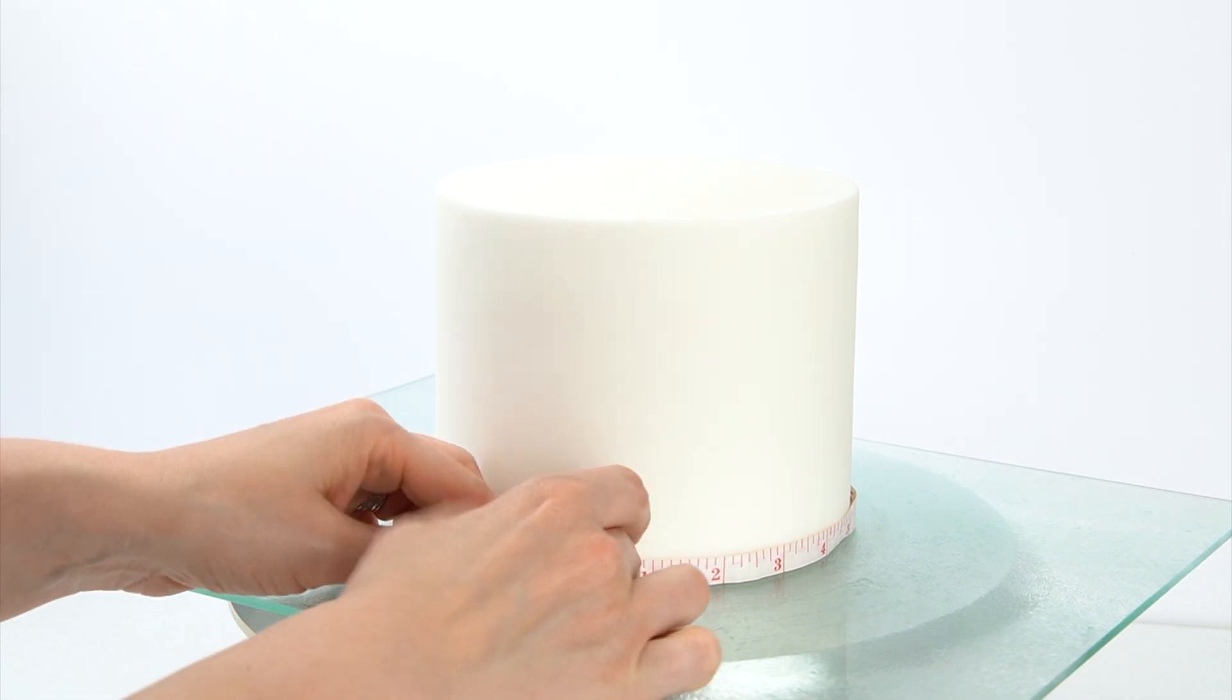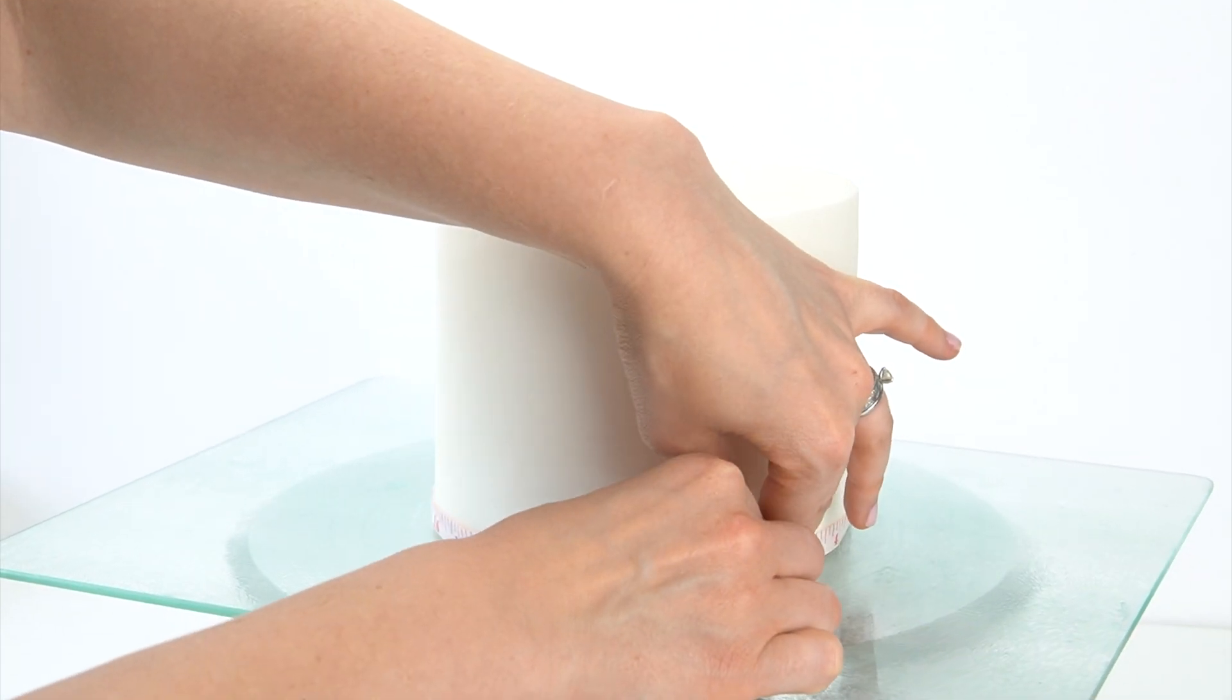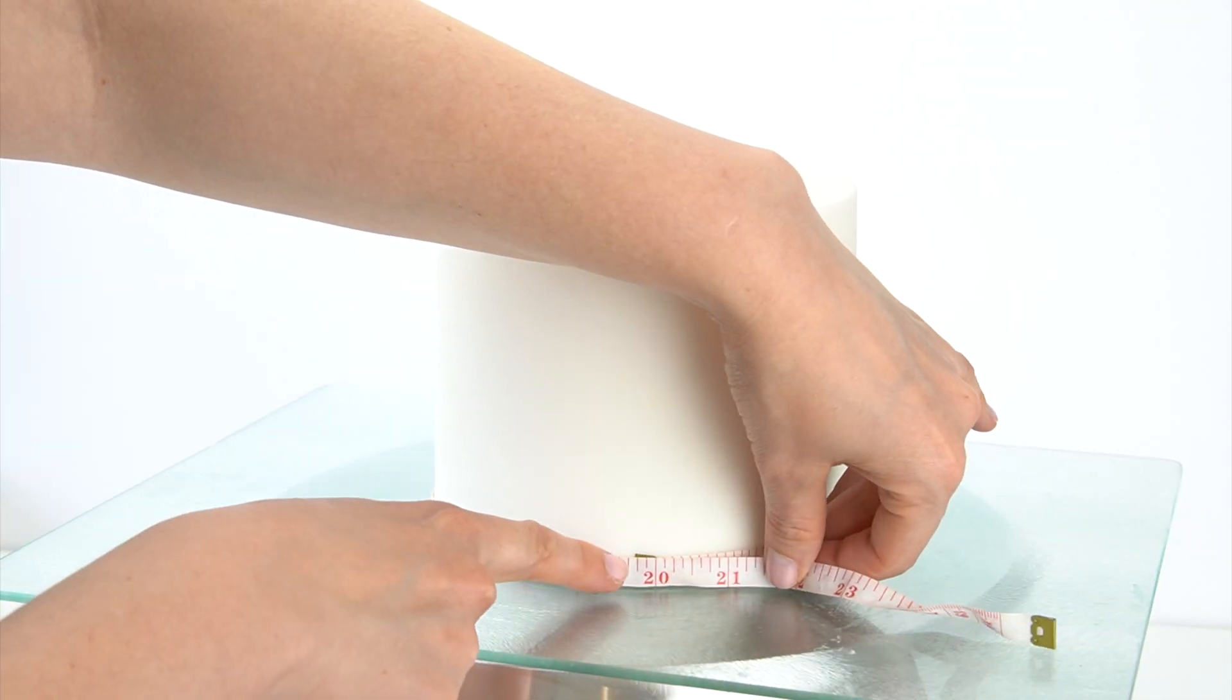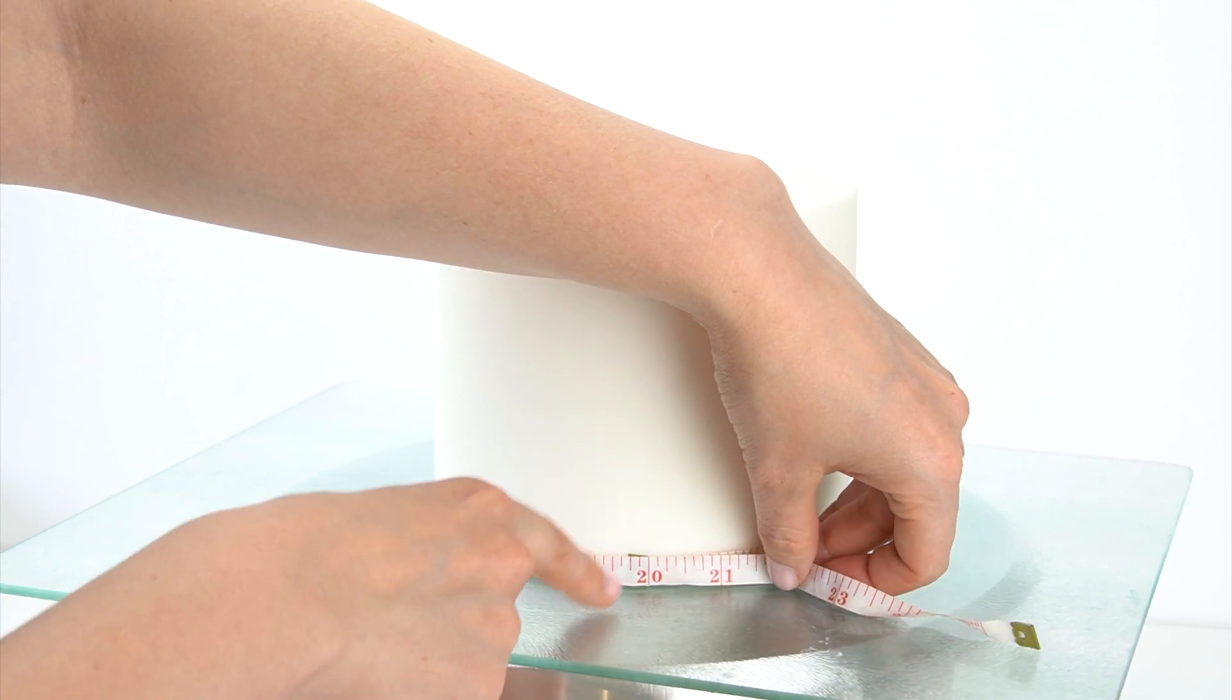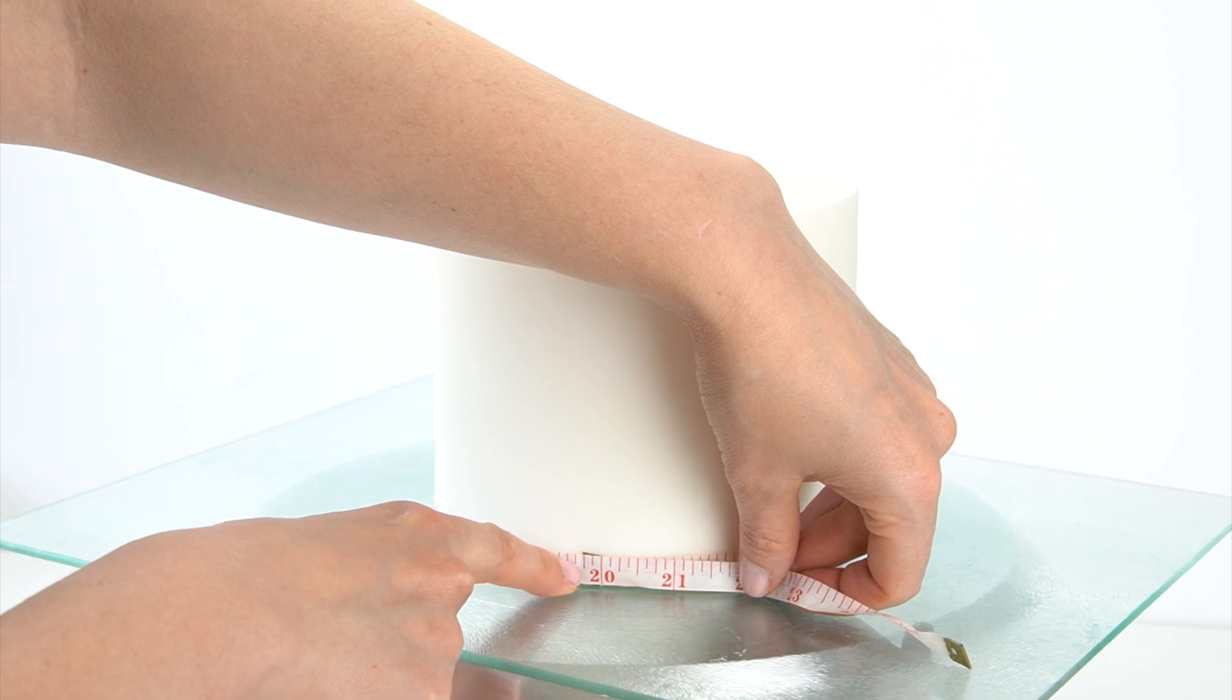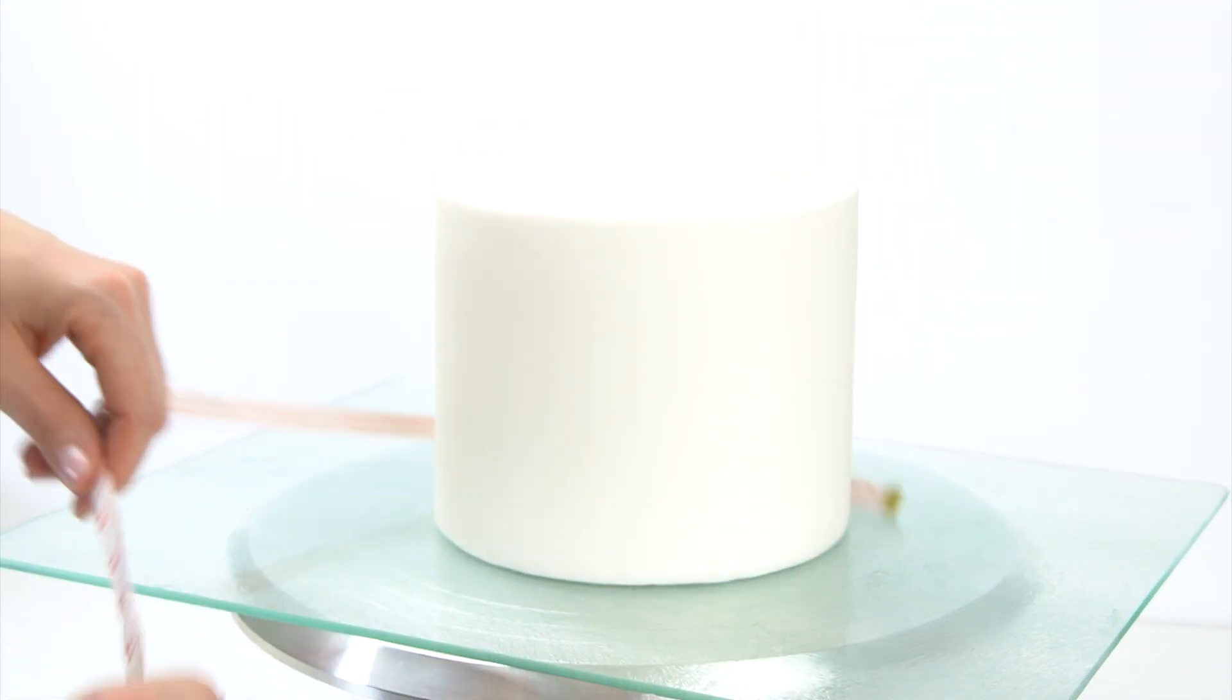The next thing to do is work out how long the piece of fondant needs to be in order to wrap around the cake. I'm going to have my piece of fondant wrapping all the way around and just crossing at the front, but if you wanted you could just have it covering part of your cake. I know that my piece of fondant needs to be between 20 and 21 inches in length.